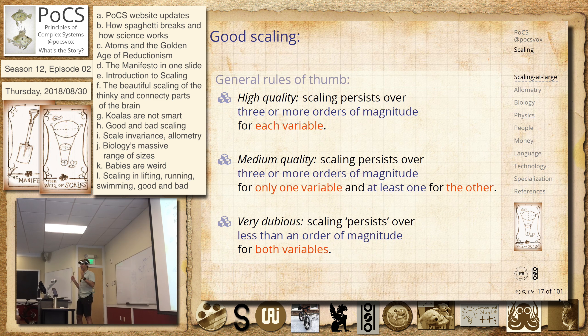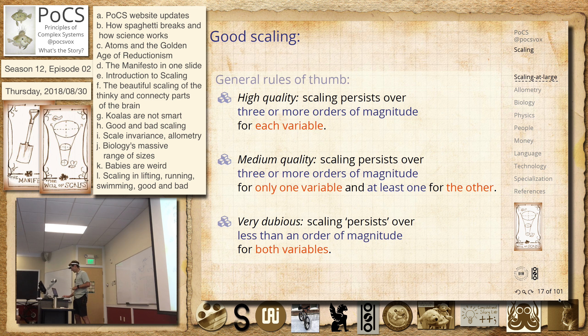There's a proclivity to find power laws anywhere. People got a little excited. This is what happens — we're social beings, and there are just sort of decades of people finding them all over the place. But the three orders of magnitude is a big deal.